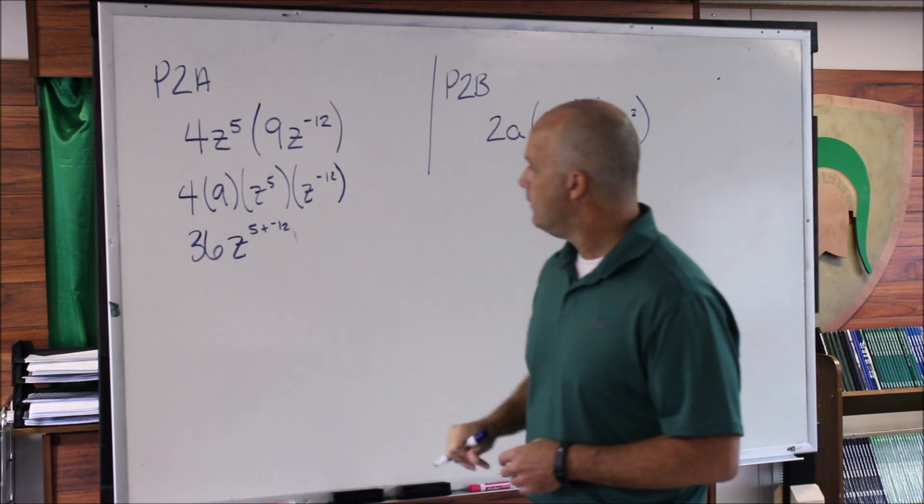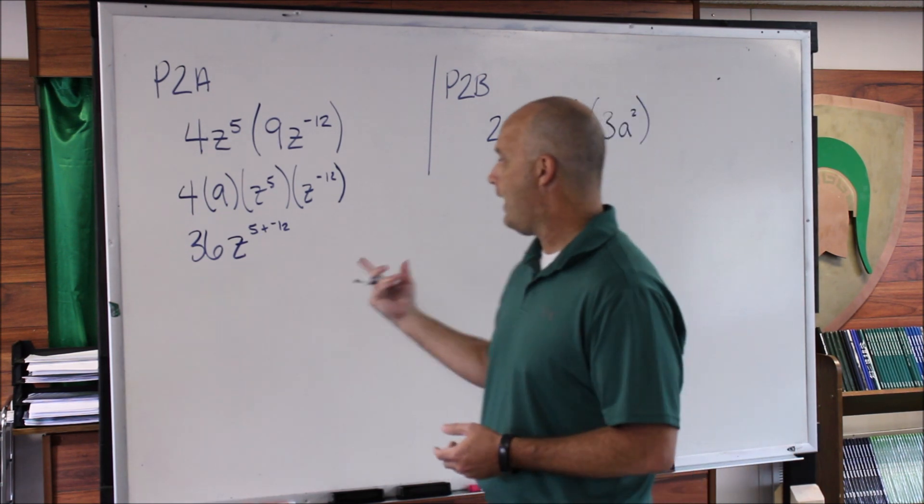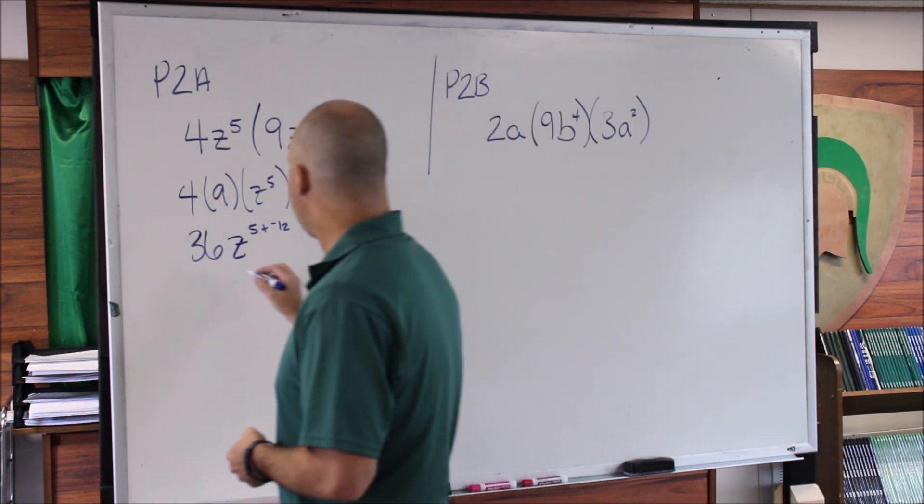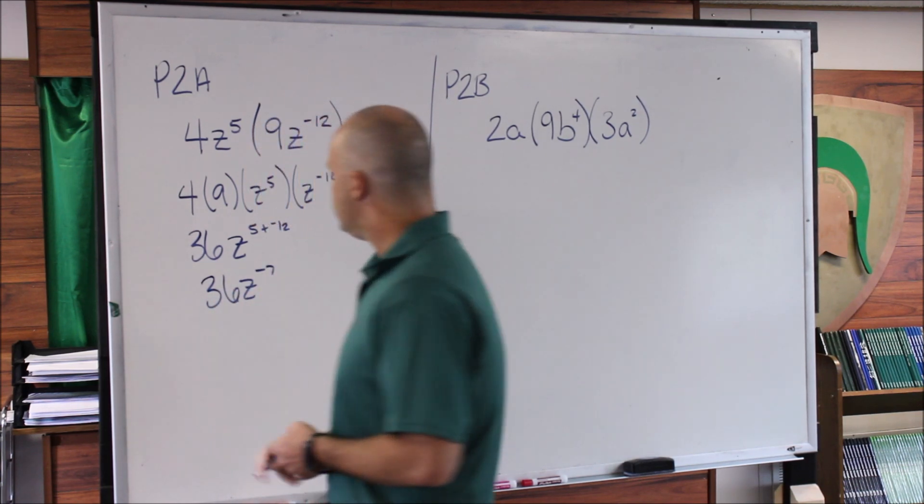And so 5 + (-12) is the same thing as saying -12 + 5 or 5 - 12, so -7. So this becomes 36z^(-7).